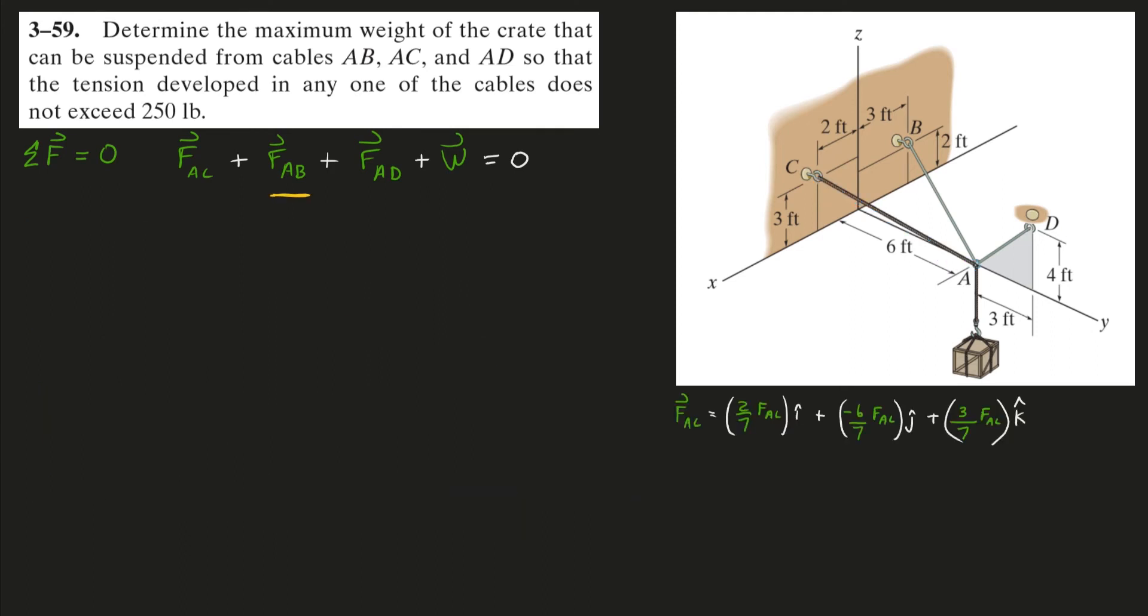I'll do force AB next. I have to make a vector from A going to B, a position vector going from A to B. I can find that by doing final minus initial. The coordinates of B look like that's going to be negative 3 in the x direction, 0 in the y direction, and positive 2 in the z direction. And of course the same coordinates of A from last time. I'll just do the vector component subtraction here.